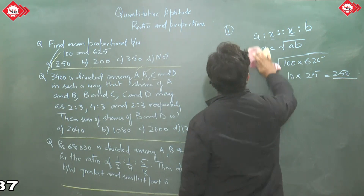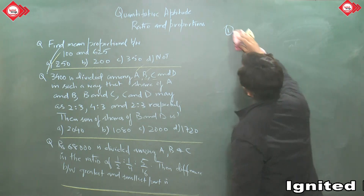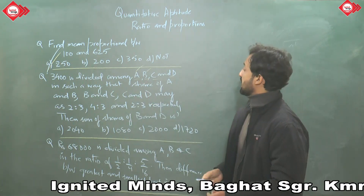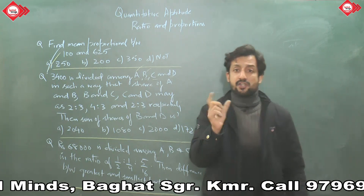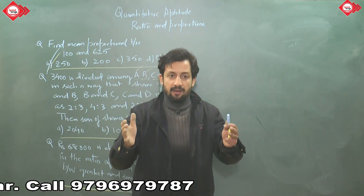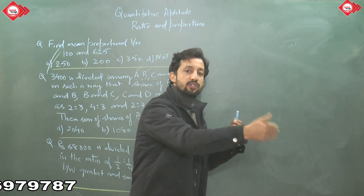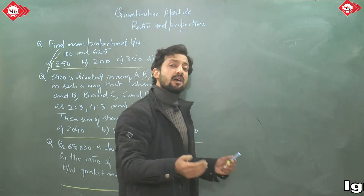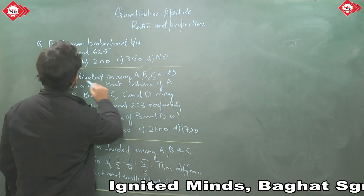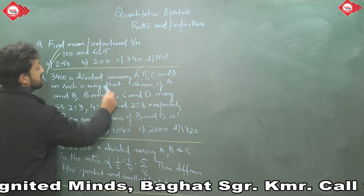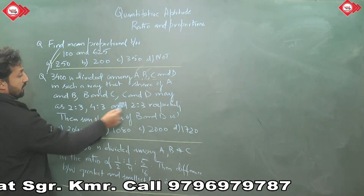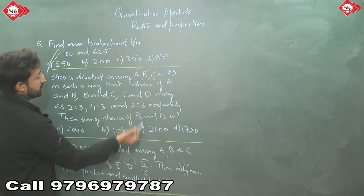Now the second part: 3400 rupees is divided among A, B, C, and D. The share of A and B is 2:3, the share of B and C is 4:3, and the share of C and D is 2:3 respectively. We need to express this as A:B:C:D.